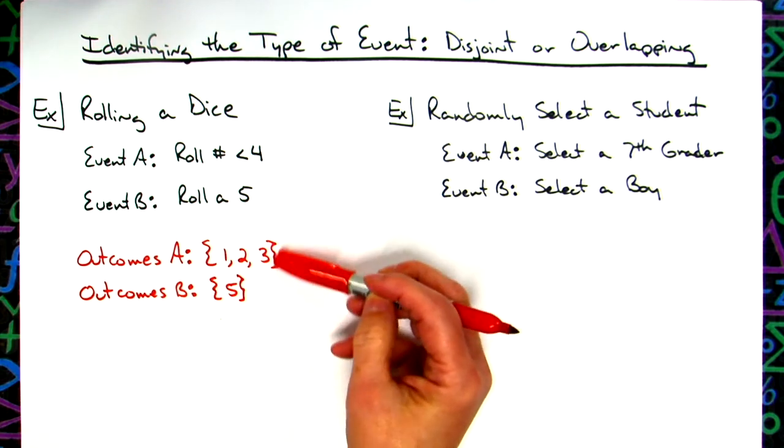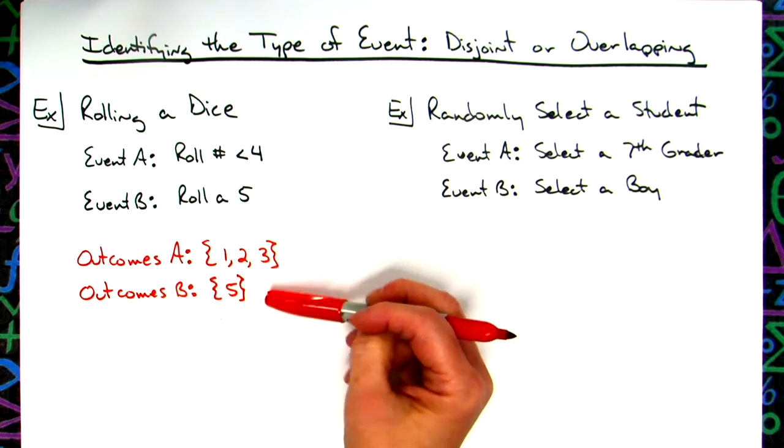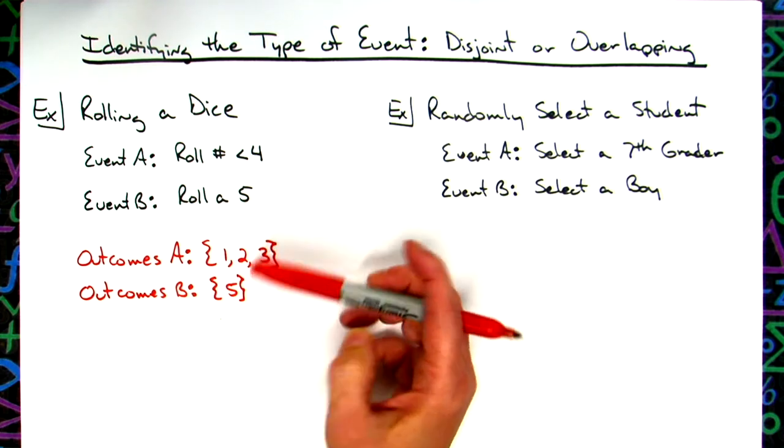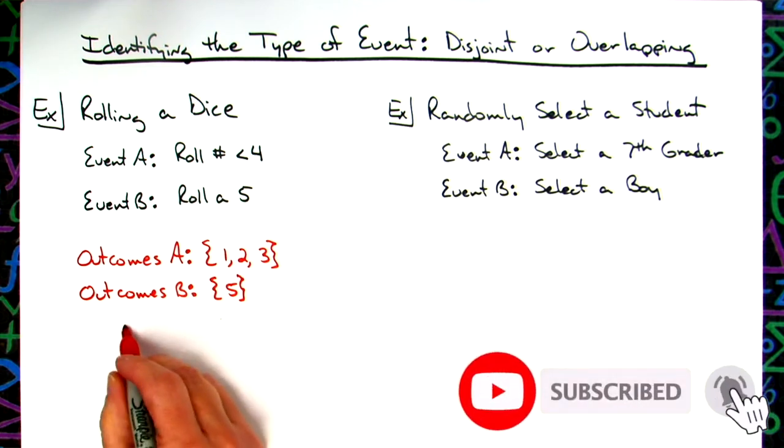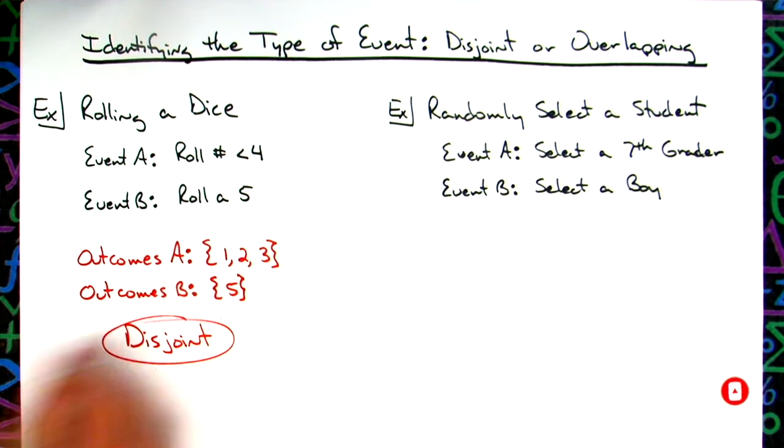I can see that none of my outcomes overlap. When the outcomes do not overlap, you have disjoint events. So this is disjoint.